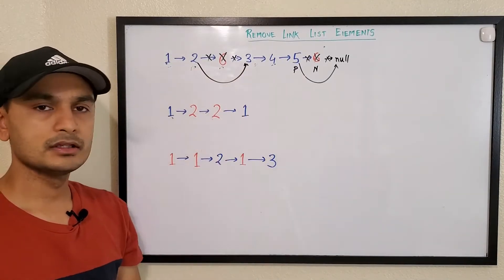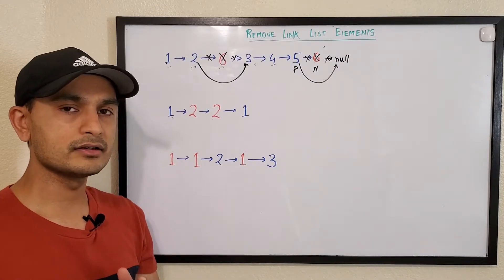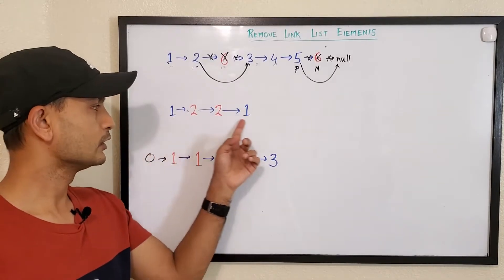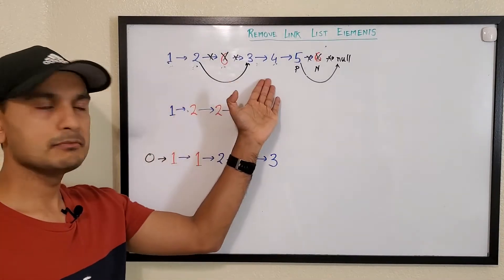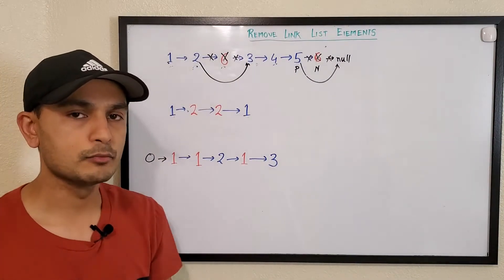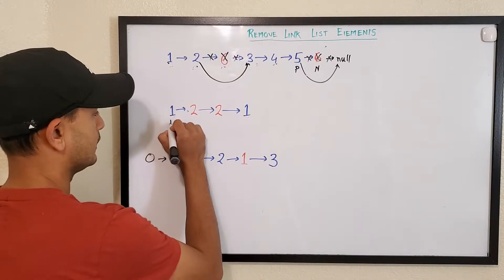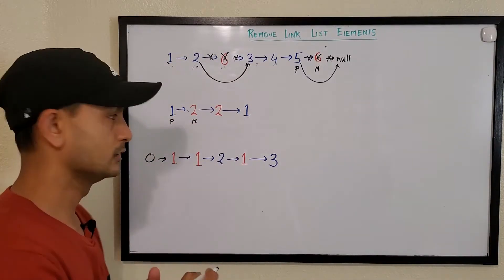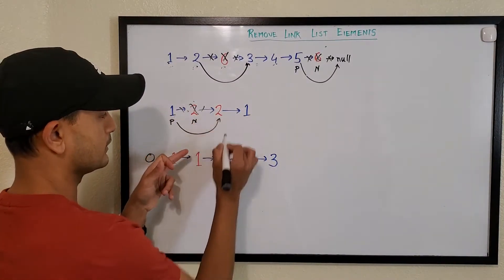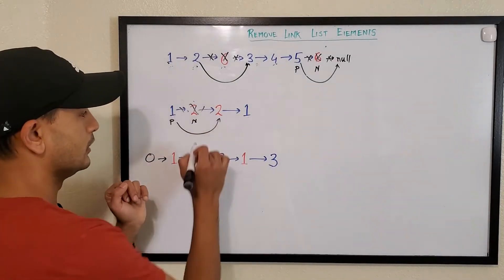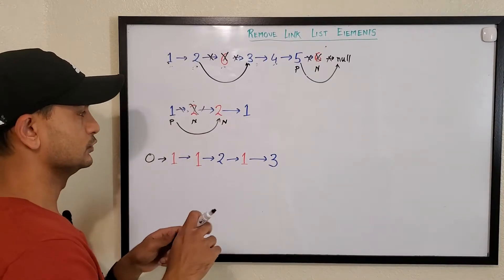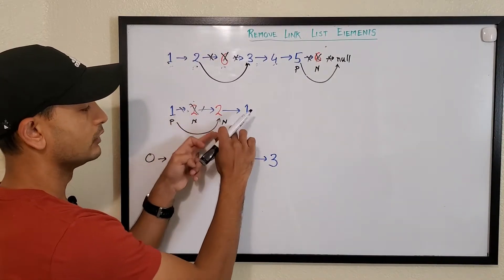There are a couple of special test cases to consider. When previous and node are following each other and we try to remove a node, we set previous.next to node.next. Node will move forward but previous will not move — previous stays at the last good node while node continues scanning.